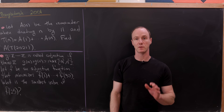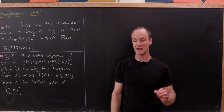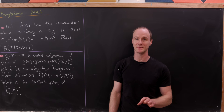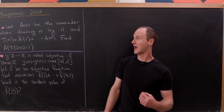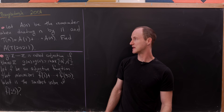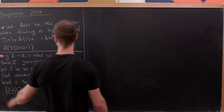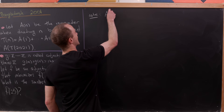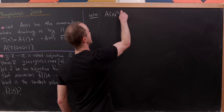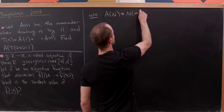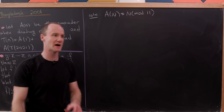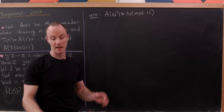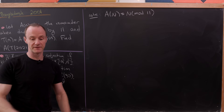Let's let a(n) be the remainder when dividing n by 11, and then we'll set t(n) equal to the sum a(1) plus a(2) all the way up to a(n). Our goal is to find a evaluated at t evaluated at 2021. This solution is going to go pretty quick. Note that a(n) is simply congruent to n modulo 11 — dividing by a number and keeping the remainder is equivalent to reducing mod 11.